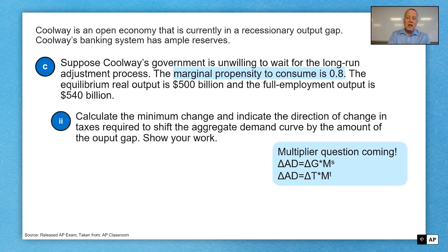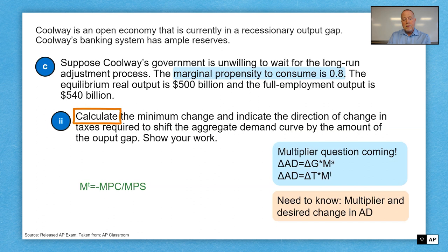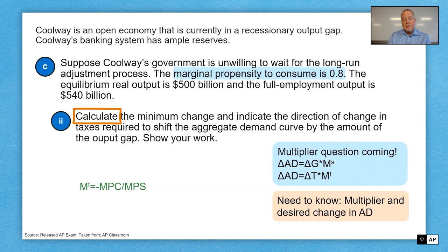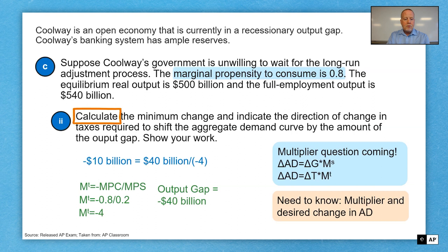On to C-II. Still dealing with the multiplier, but now they want to change taxes to shift AD to close the gap. In this case, it's a tax question — we need a tax multiplier. That's going to be negative MPC over MPS: negative 0.8 over 0.2 equals negative 4. Our output gap is the same — negative $40 billion. Attempting to increase output by $40 billion to close the gap means they would have to cut taxes by $10 billion.